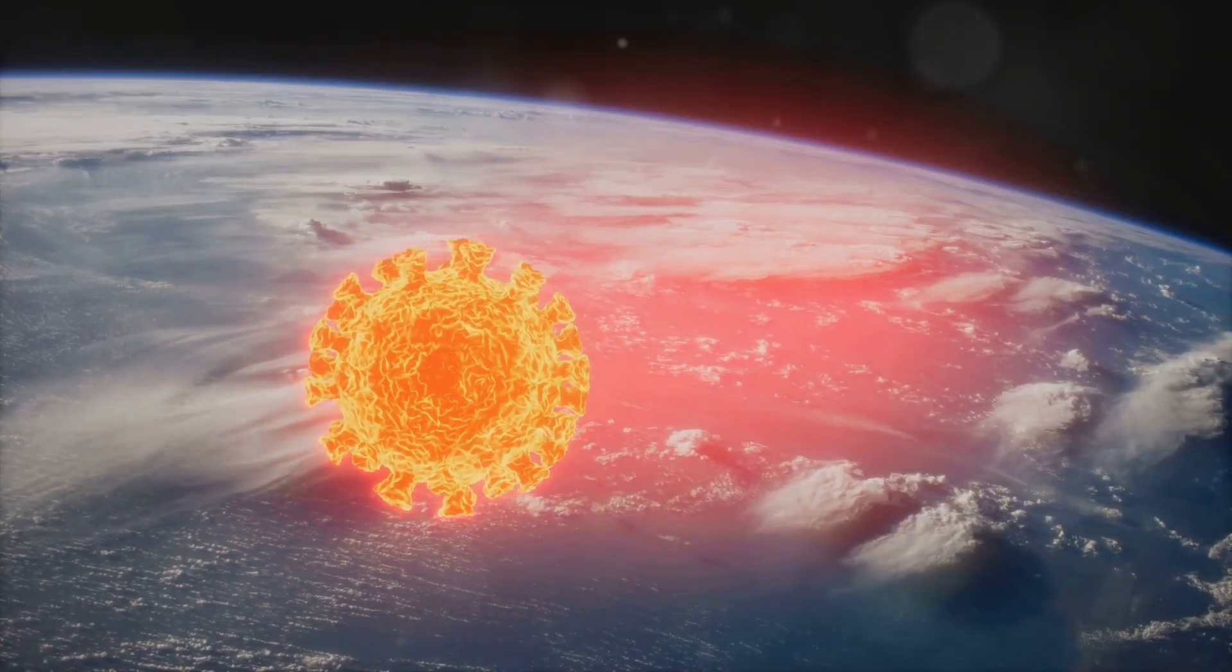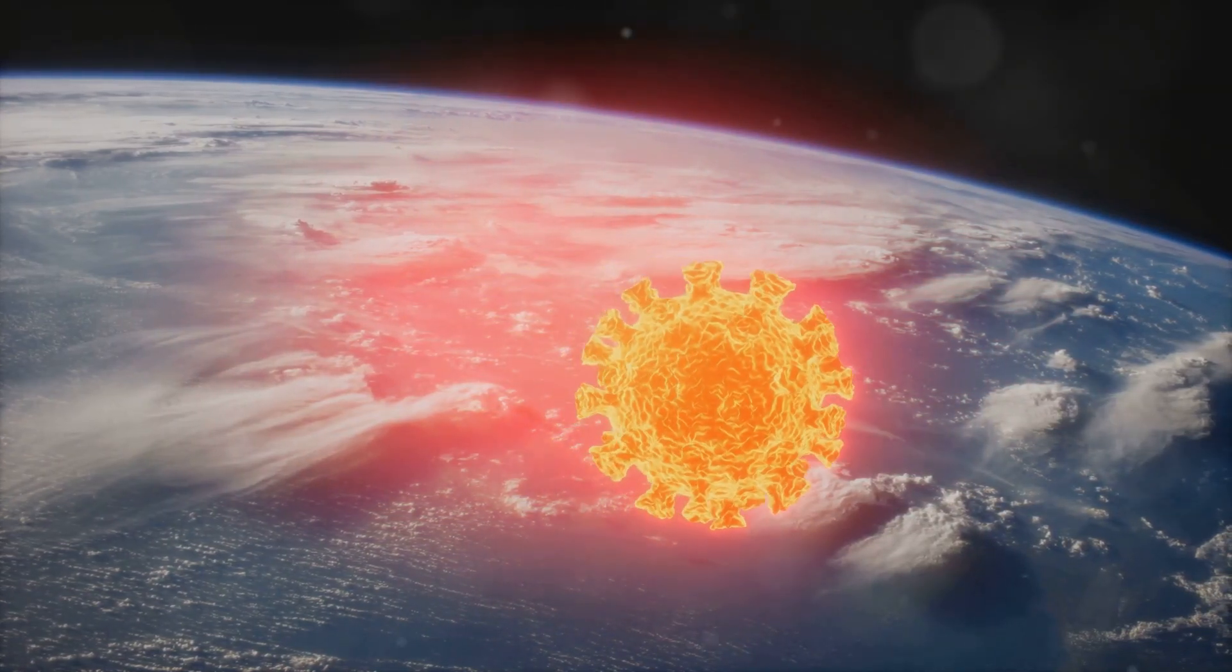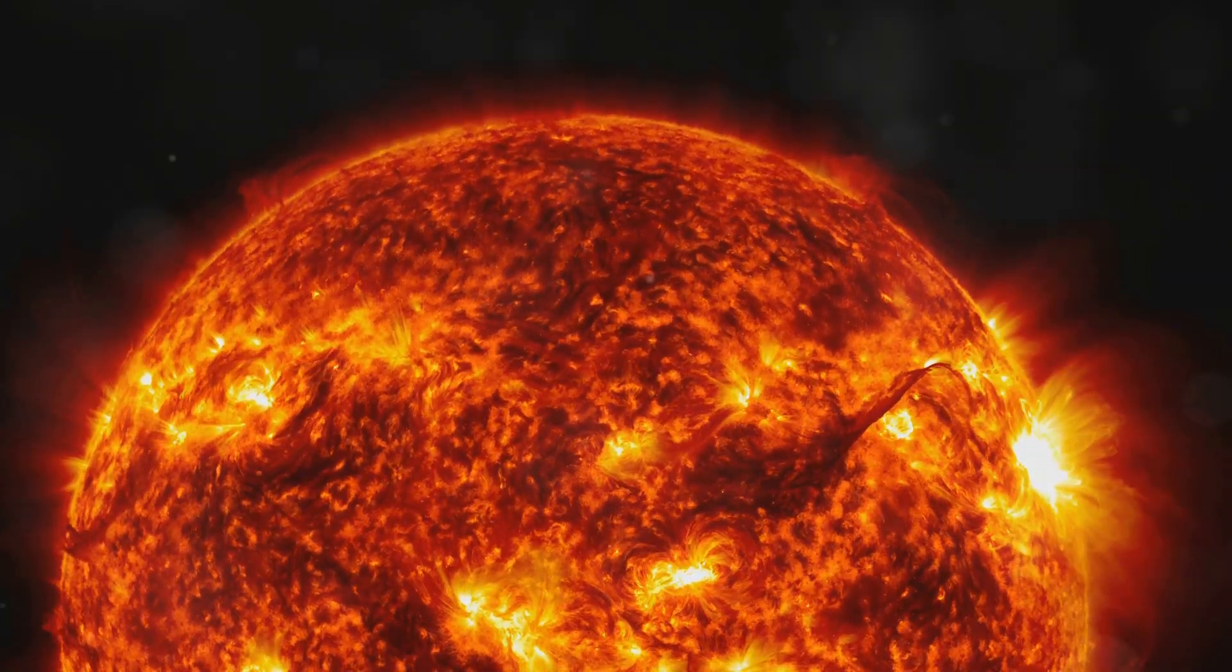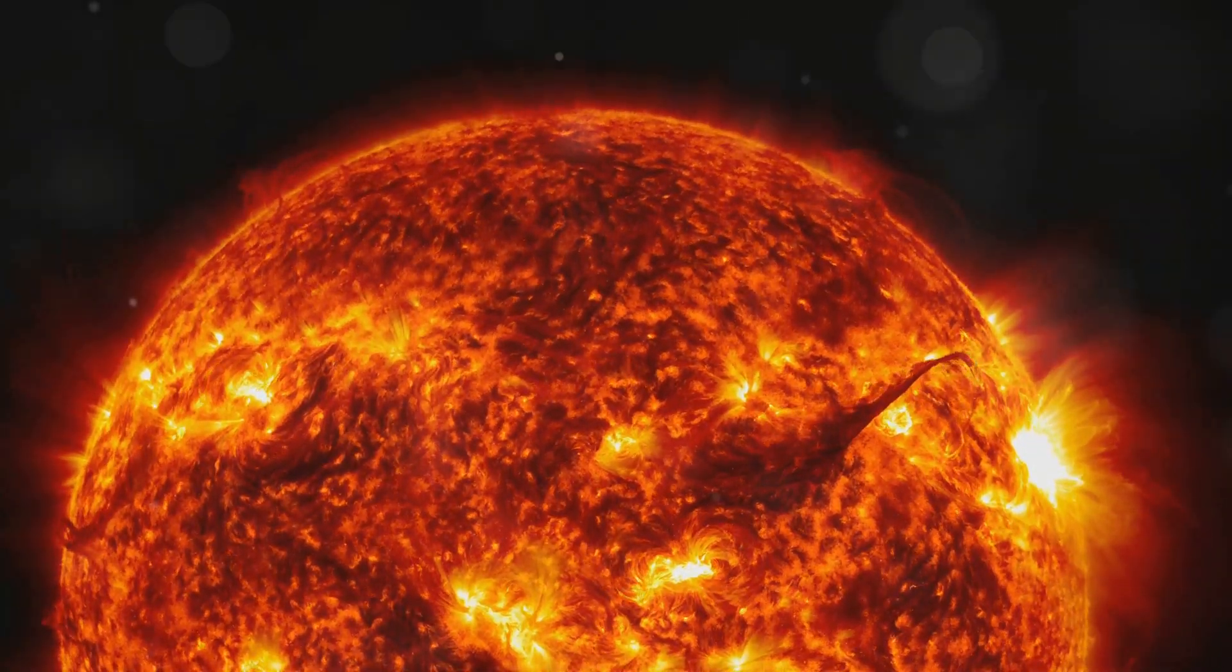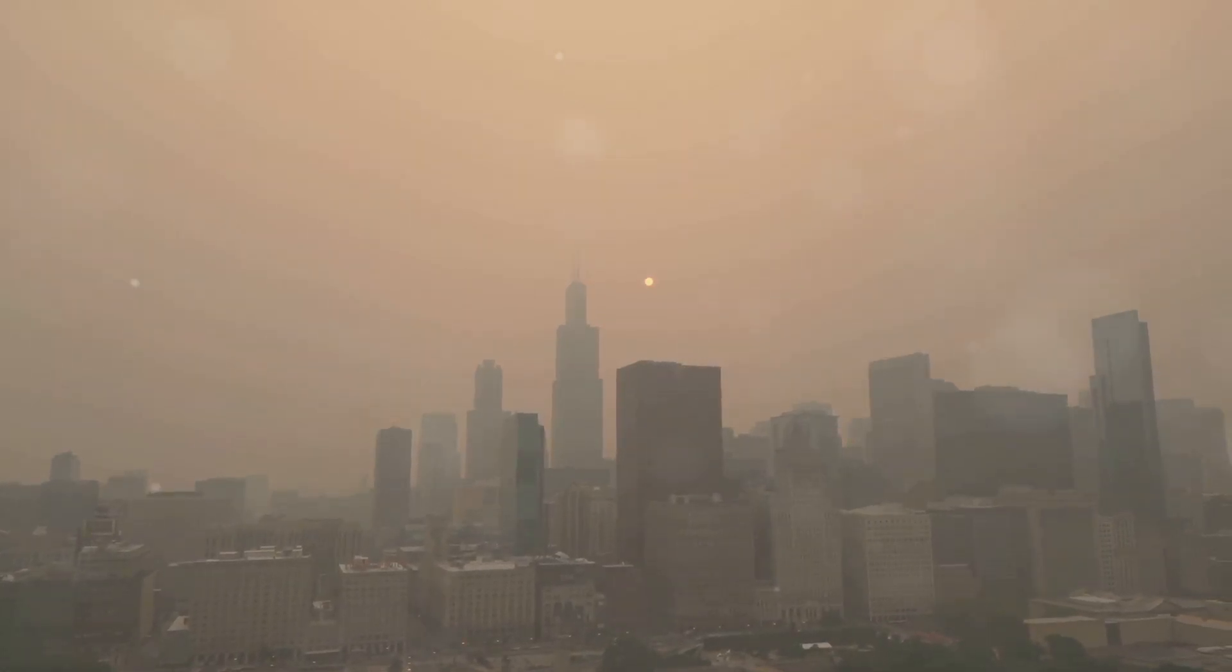If a GRB were to hit Earth, it would first strip away our ozone layer. This would expose us to harmful ultraviolet radiation from the sun. It could also trigger chemical reactions in the atmosphere, creating smog and acid rain.